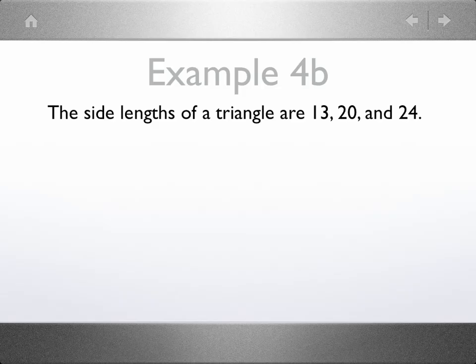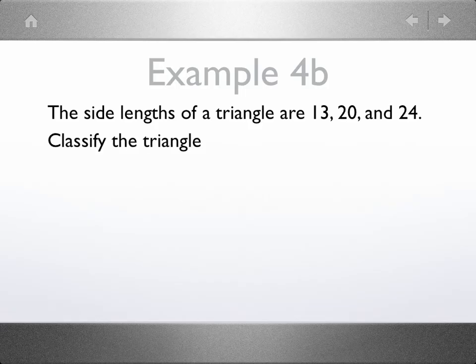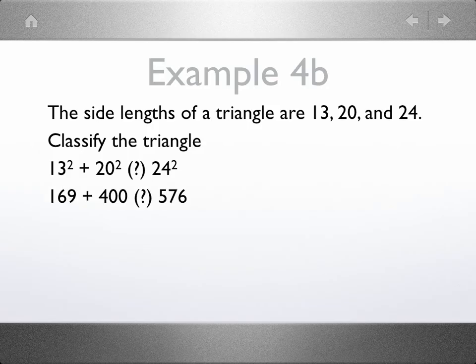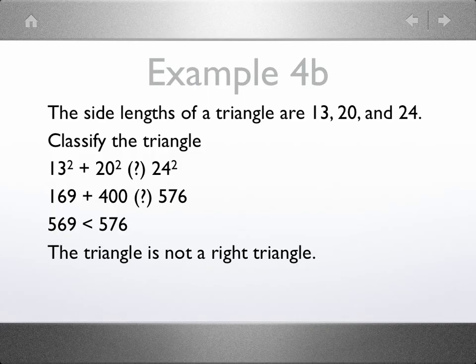We have a triangle whose side lengths are 13, 20, and 24. We are asked to classify the triangle. So we compare a squared plus b squared to c squared. Let's do the math. Let's add. 569 is actually less than 576. So in this case, we're talking about an obtuse triangle.